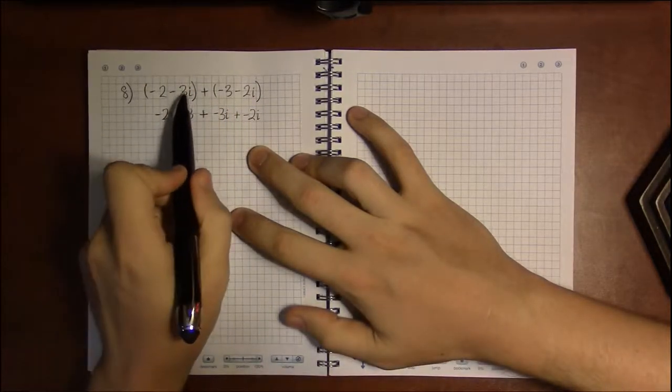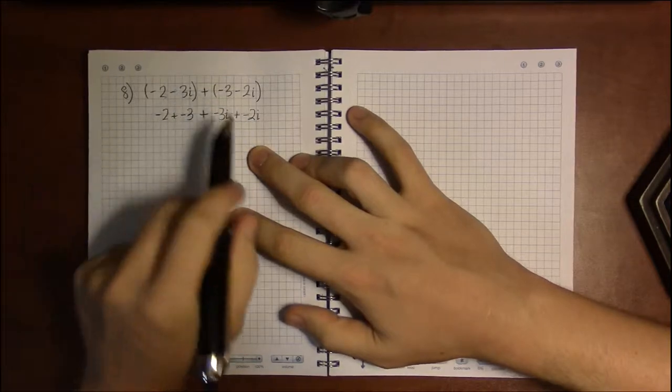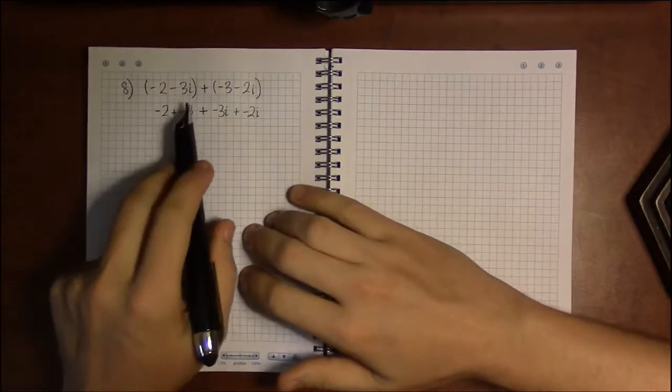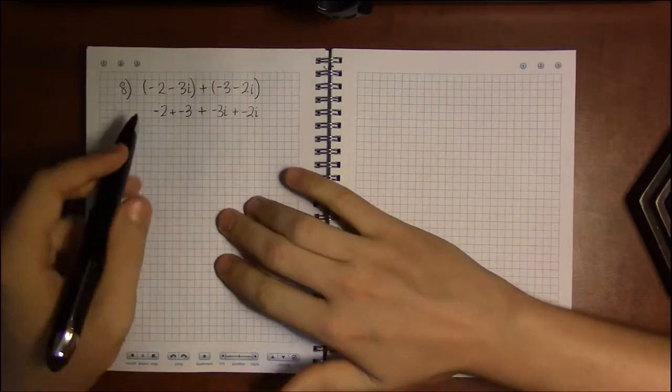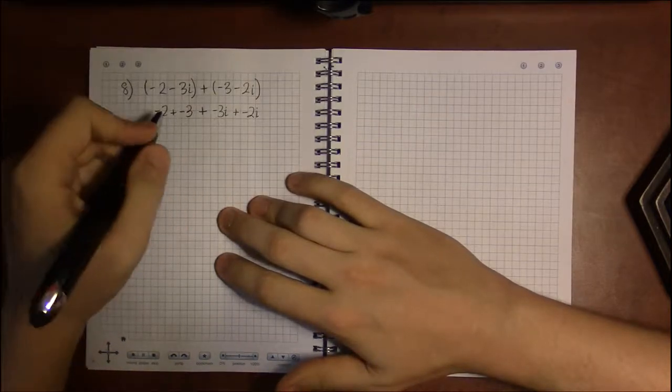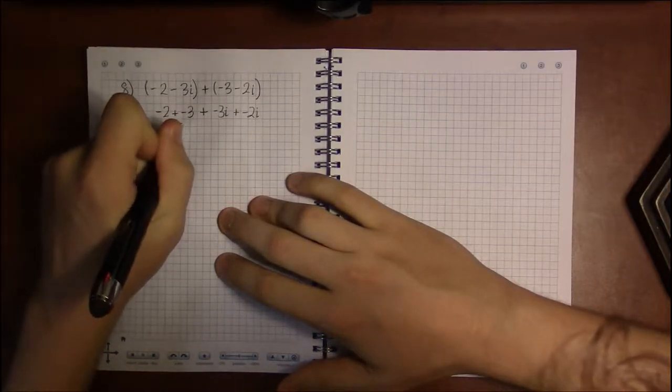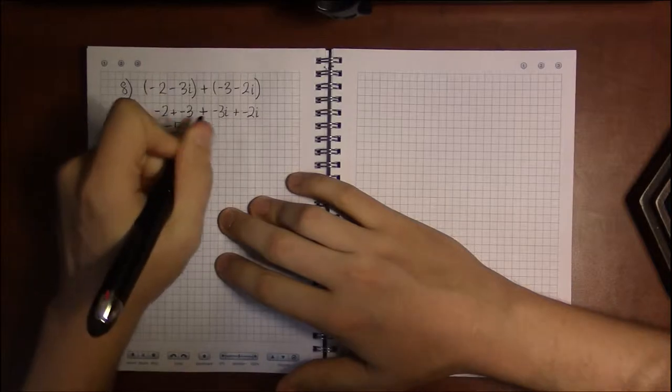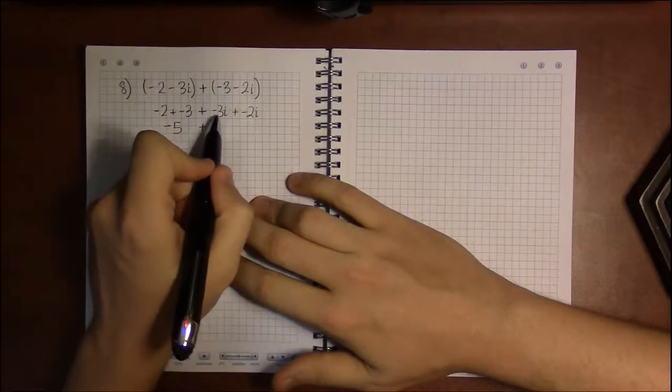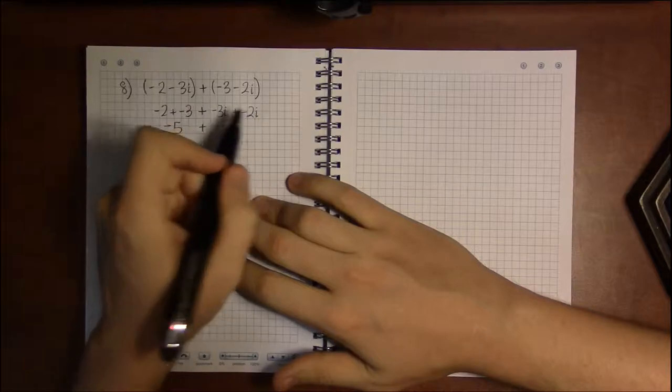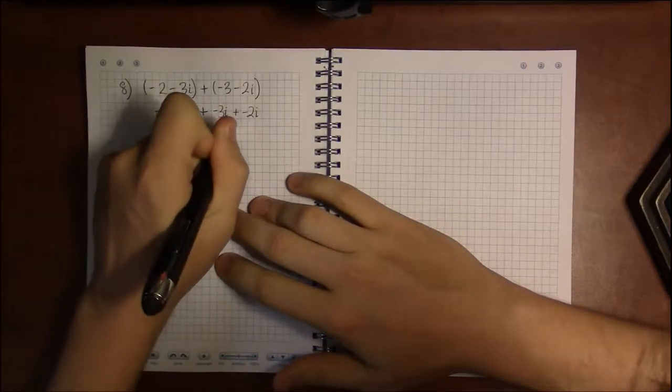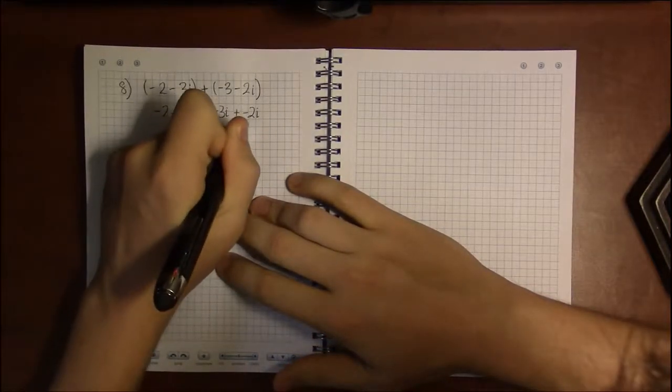I have a nasty habit of dropping the dots on top of my i's, so don't let that confuse you. Minus 2 plus minus 3 is a minus 5. Minus 3i plus minus 2i—minus 3 of something plus minus 2 of something is just minus 5 of that something.